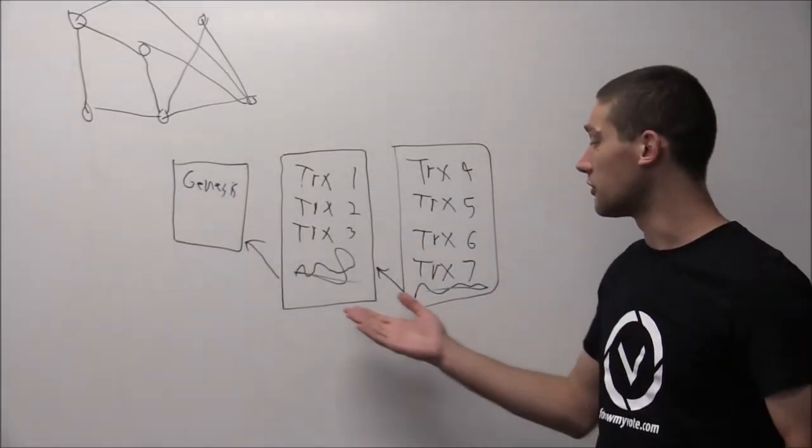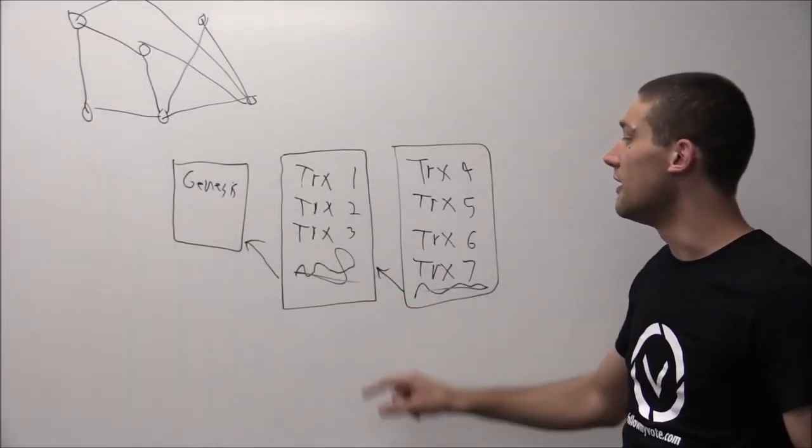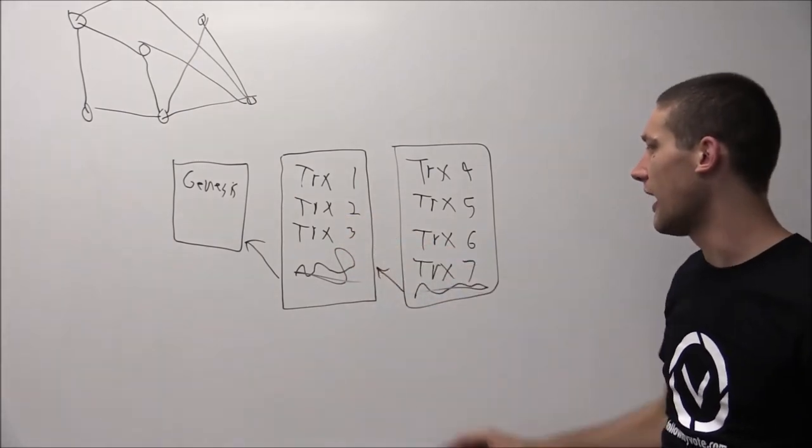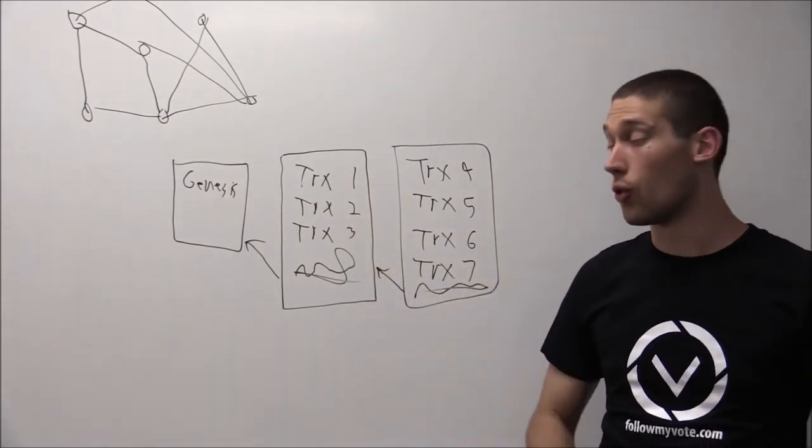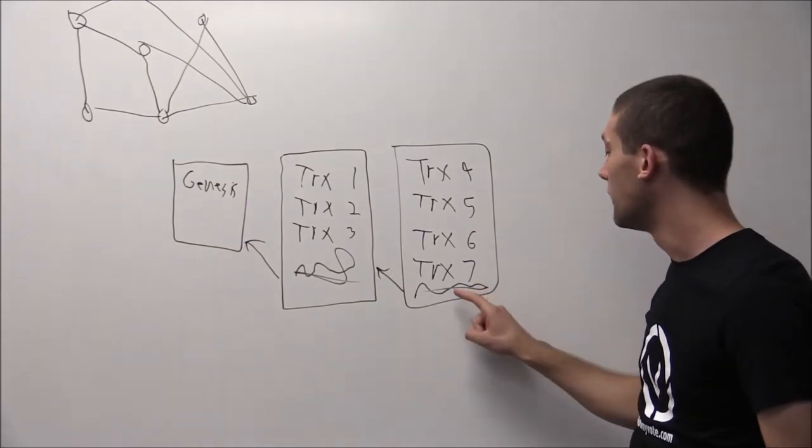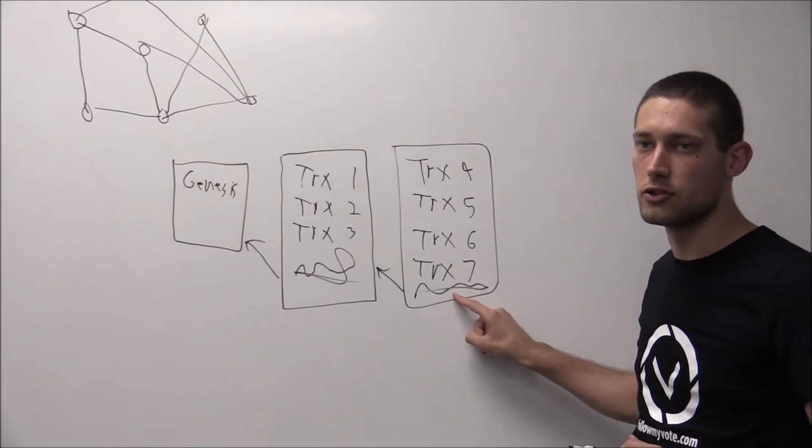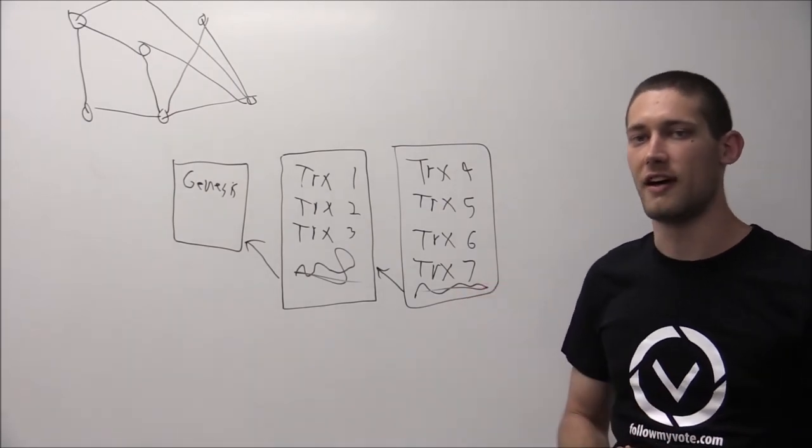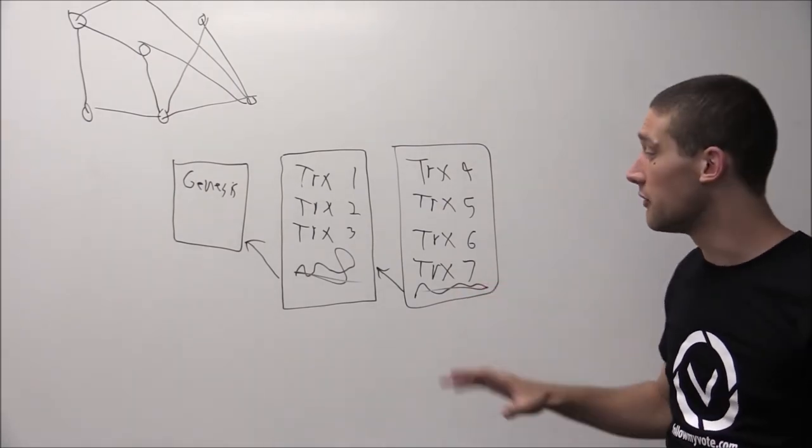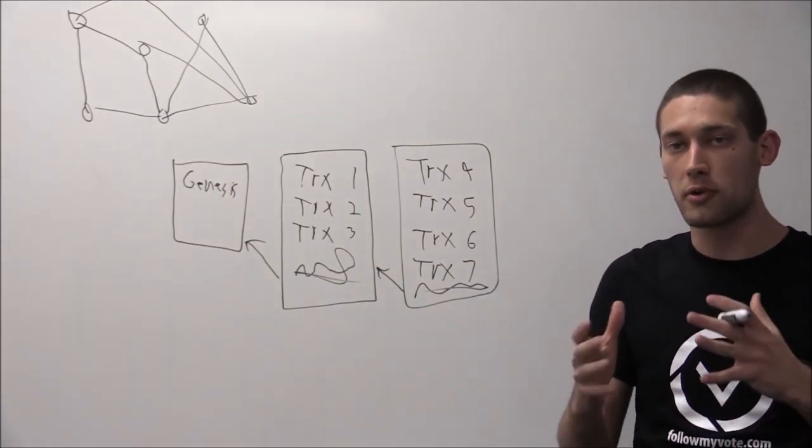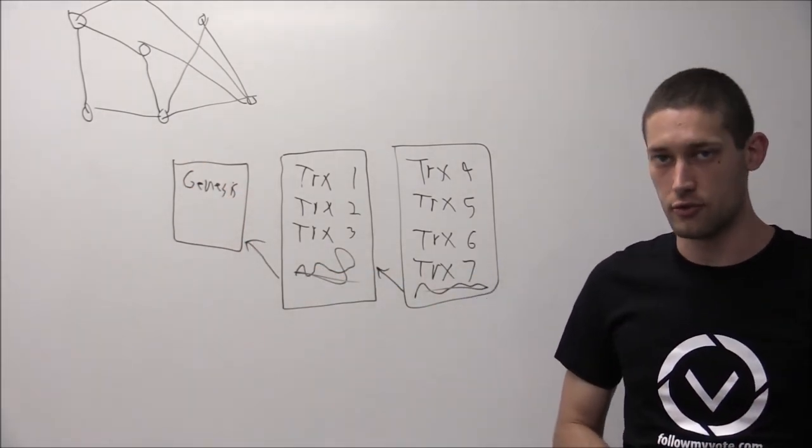As more blocks accumulate in the network, if anyone goes back in history and changes any of the old transactions or the Genesis state itself, then the signature on all blocks following the change will also be invalid. This means that a blockchain establishes an unchangeable permanent record of changes to the database.